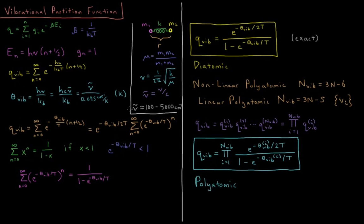Generally you'll be able to look up in some table what the vibrational constants are for a given molecule, then convert those to vibrational temperatures. If they give you vibrational temperatures in a table, even better — just substitute those directly in. Compute this quantity for each vibrational mode, multiply them all together, and that will be your vibrational partition function for the given molecule.